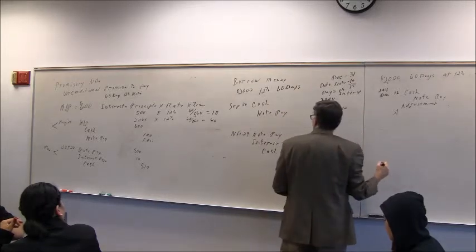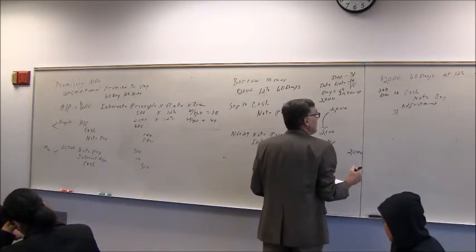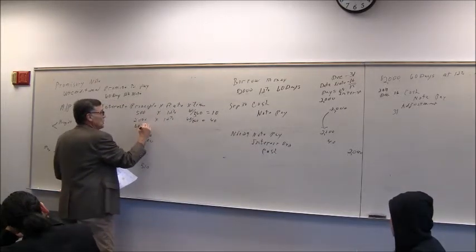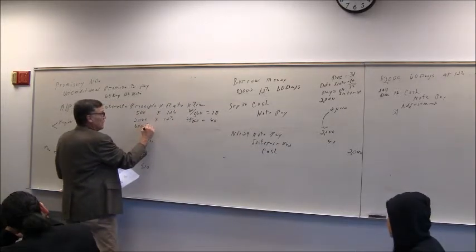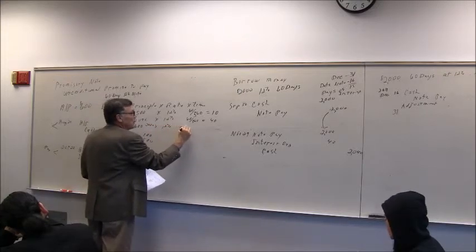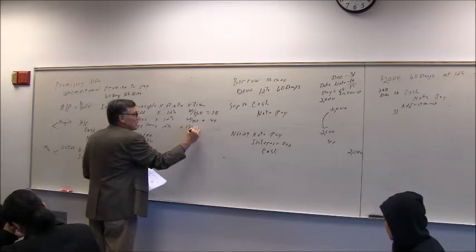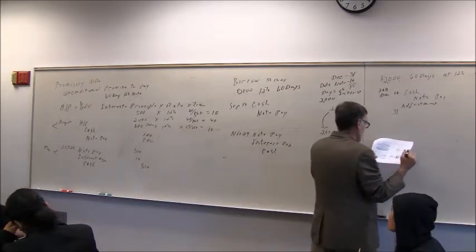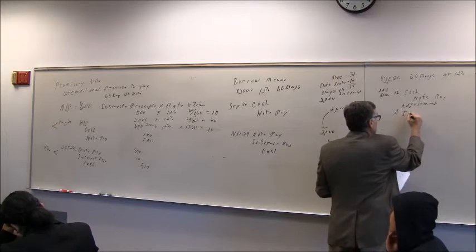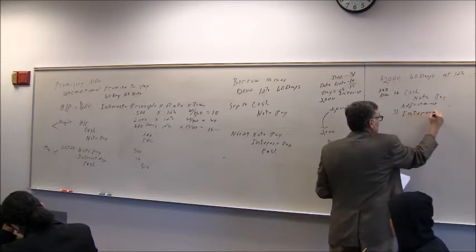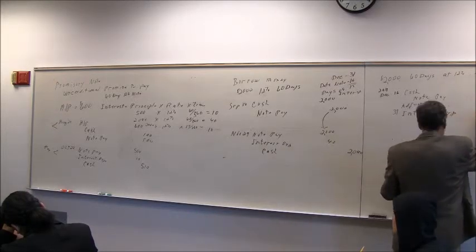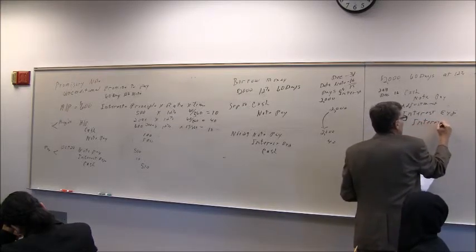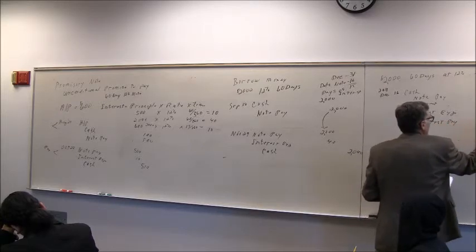December has 31 days. The 16th is the date you borrow. There's 15 days of interest. So this is December 31 days, the date of the note is the 16th, and so there's 15 days of interest. It's principal times rate times time, $10. So it's $2,000 times 12% times 15 over 360, and that came out to $10. So you have adjusting interest at the end of the fiscal year. That's interest expense, that will be a debit of $10, and at that point in time is interest payable of $10. This is an accrued expense.